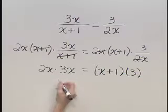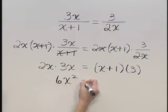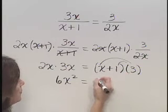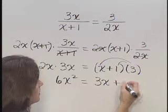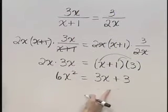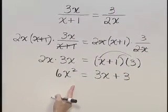Now let's multiply. On the left we have 6x squared. On the right distributing the 3 gives 3x plus 3. At this point we've got a quadratic equation. Let's put it in standard form by moving everything to the left.